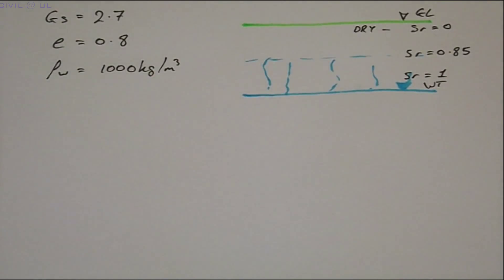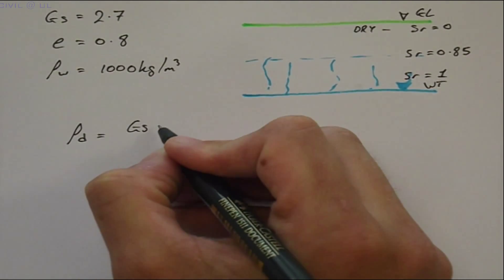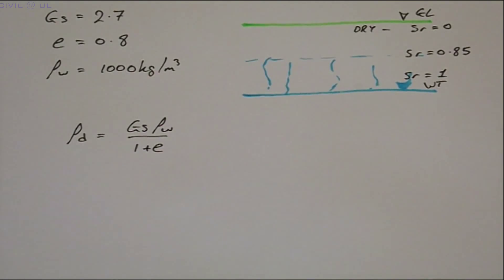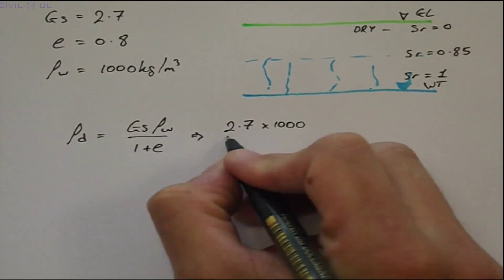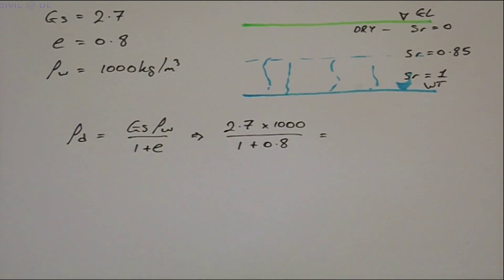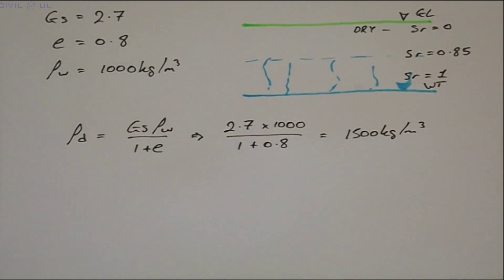Let's see. The dry density is equal to GS times ρW over 1 plus E. Substituting, we get 2.7 multiplied by 1000, all divided by 1.8, giving us a dry density of 1500 kilograms per meter cubed.